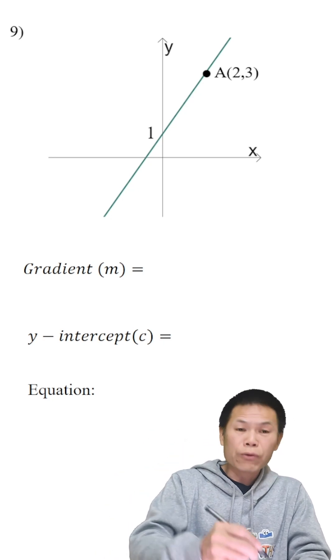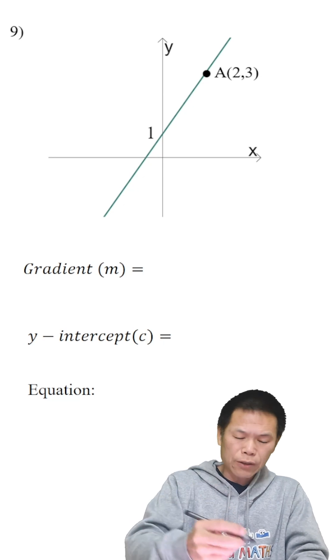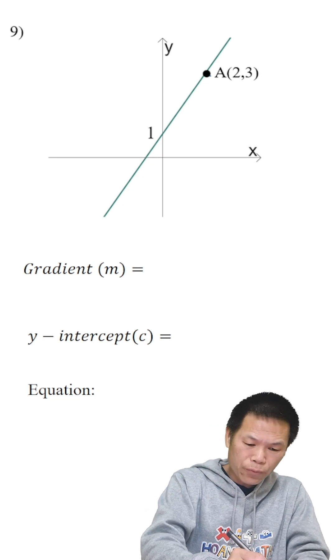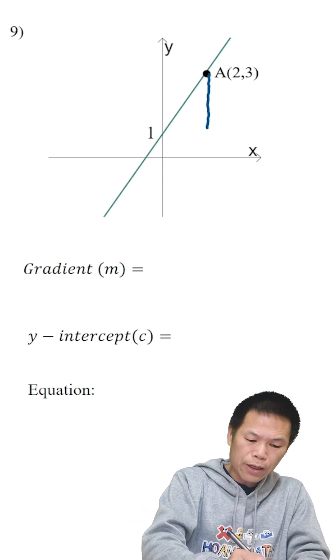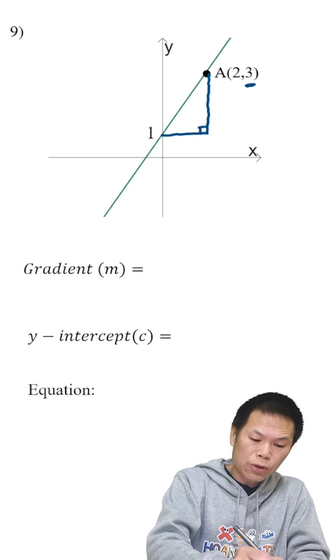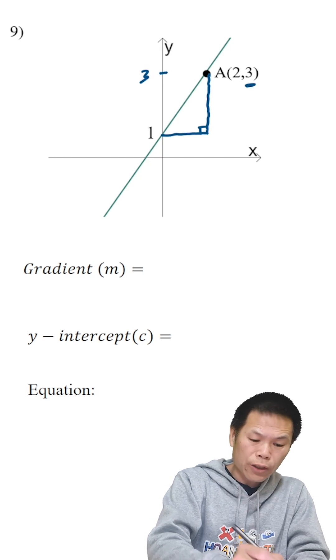So therefore, we don't need to write a plus first. We just draw a triangle to find out the gradient of this, like this. And we know that this is 3 for the y value, so therefore, this is 3.